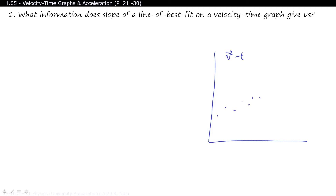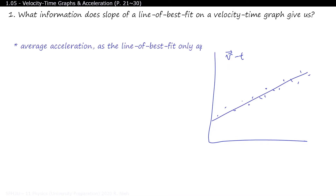As all the data points may vary — even though they may increment or decrement — when you draw a line of best fit, it only tells you the average acceleration, as it only approximates it. After all, when you look at the acceleration at certain points, it is far different than what the final answer is.